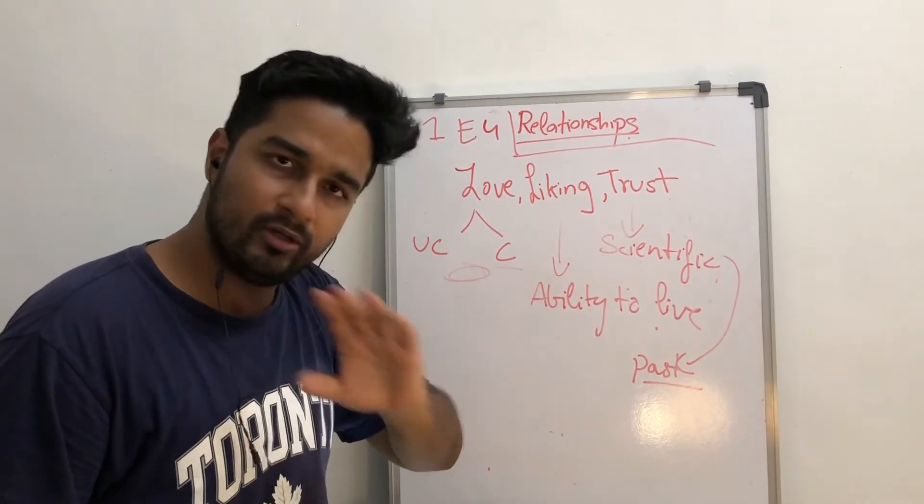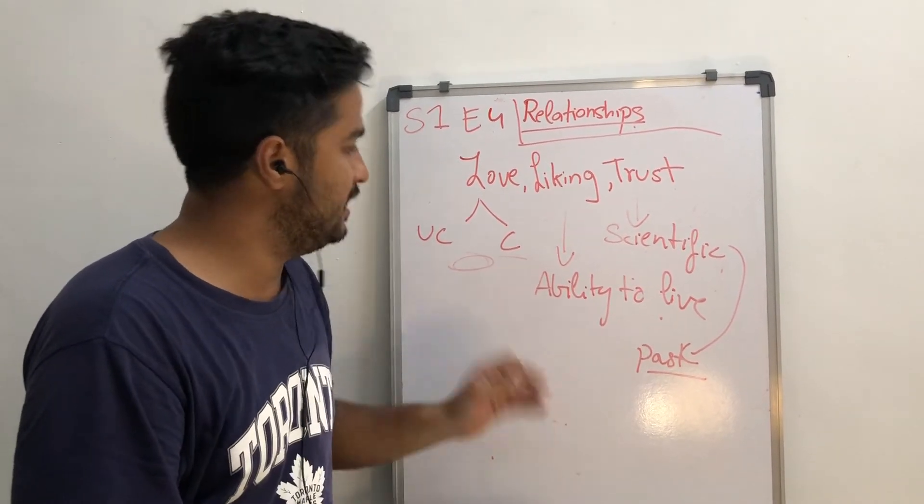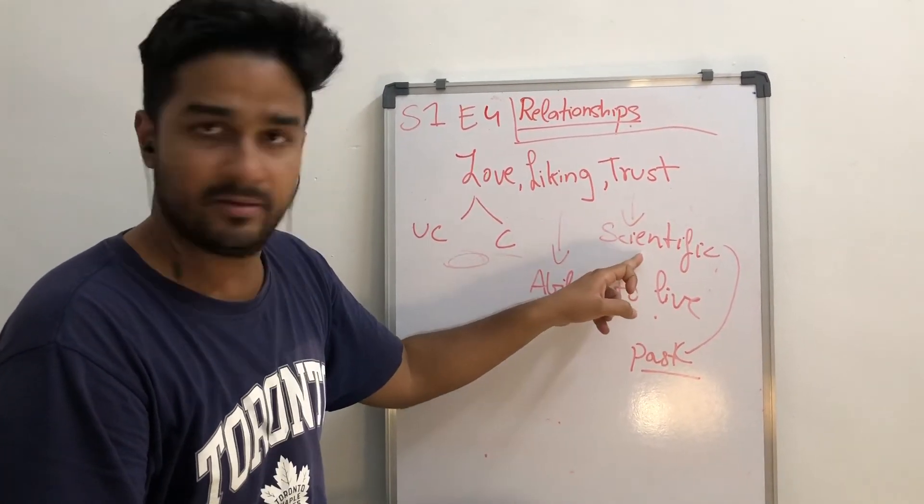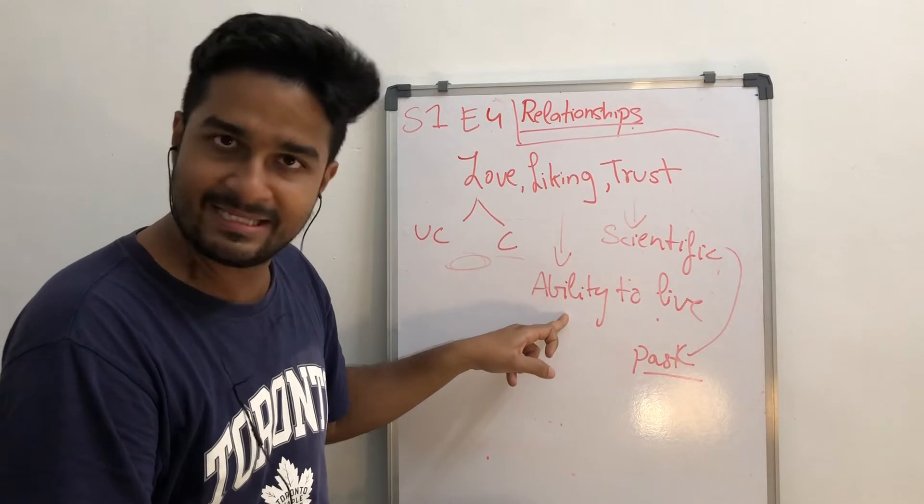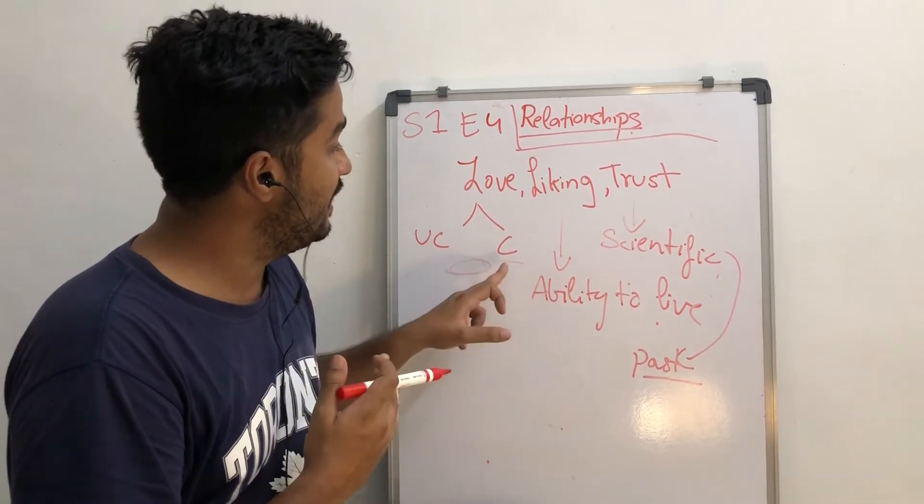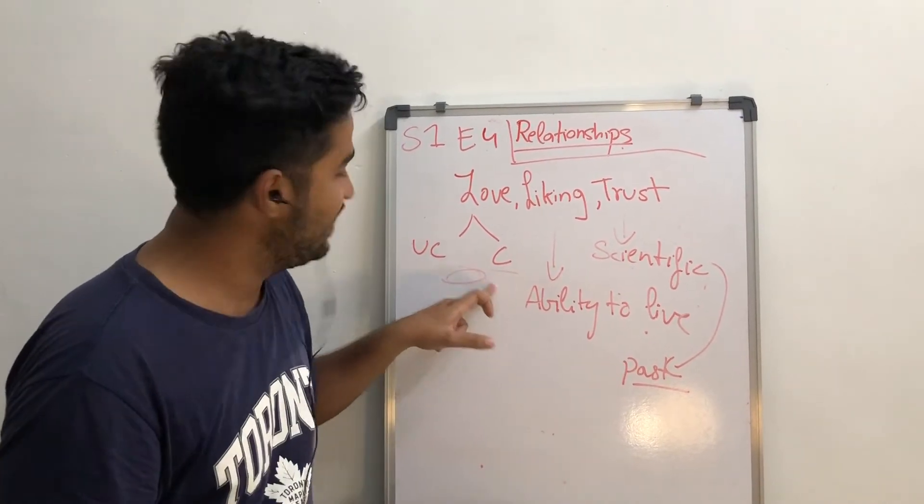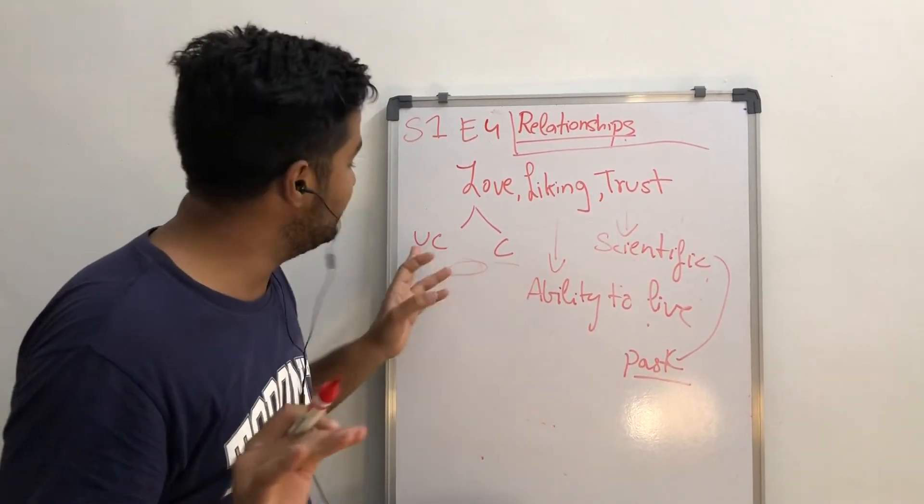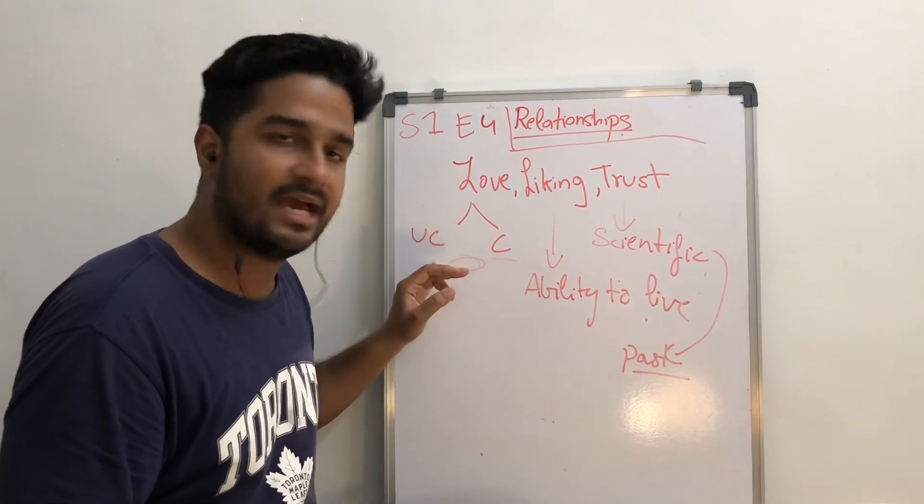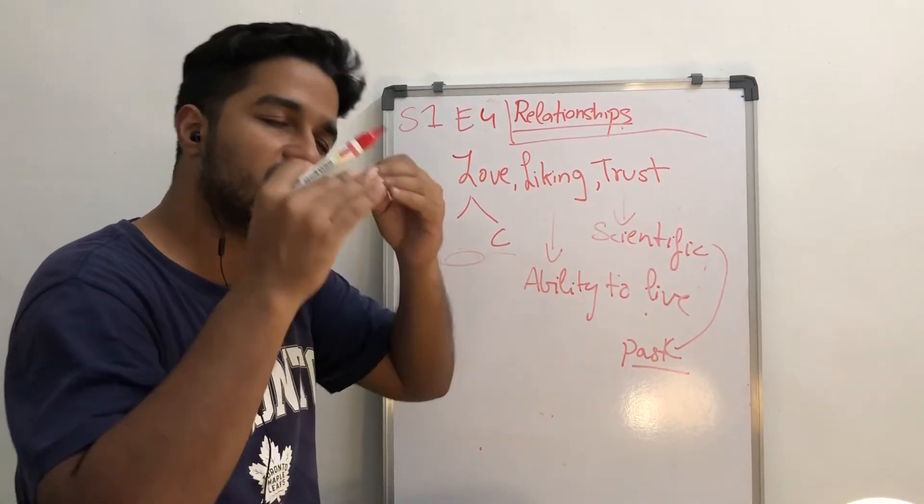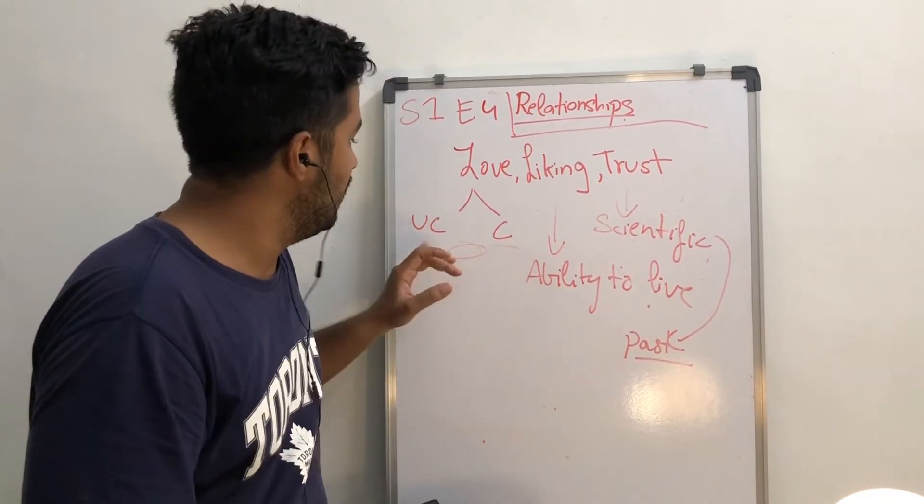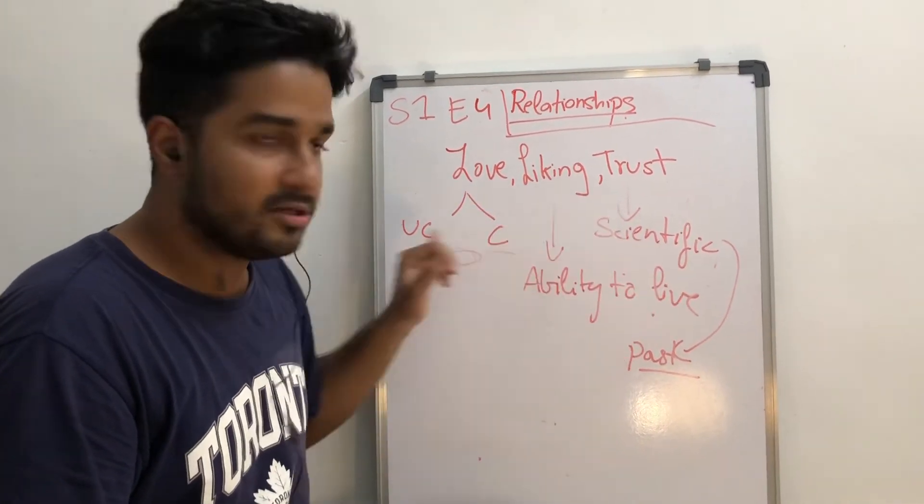Trusting someone, especially when they have not told you that you can trust them, is going to make you unhappy. So are we very clear? This is scientific. This is slightly less scientific, more on feeling. This is more like 80 to 90 percent of feeling. And this is pure feeling - there is no science here. The moment there is science here, it is not unconditional love.